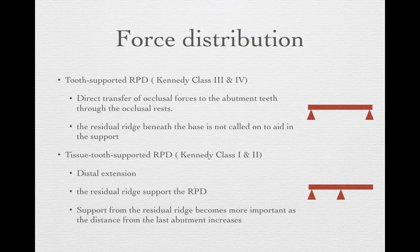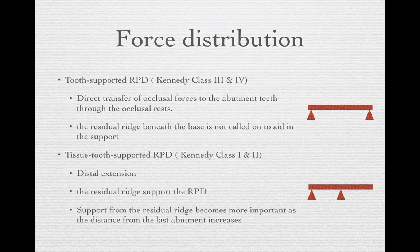The most common RPD we treat in the clinic is the tissue-and-tooth-supported RPD, which means Kennedy Class 1 and Kennedy Class 2 cases. These have distal extensions — a distal edentulous area — and those distal extension areas will support the RPD. When we treat partial dentures, sometimes the force will just be on the tooth, and sometimes the force will be on both the tooth and the tissue. So it's very hard to use a single way to take an impression, which is why several methods have been introduced.